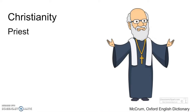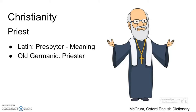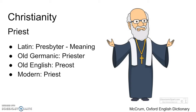Another example is the word 'priest.' The term in Latin is 'presbyter,' which means elder — the idea being that the priest is the respected elder leading the church. The Old Germanic was 'priester,' and it moved on to Old English where the term became 'preost.' Although the term has similar usage now, the term in Old English was more generic, applying to any minister or religious leader. Eventually, the modern-day usage of priest was influenced by the rules of the Catholic Church.